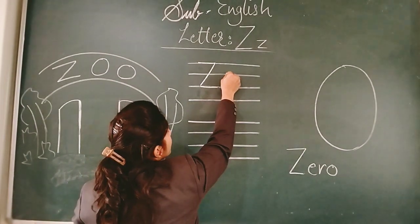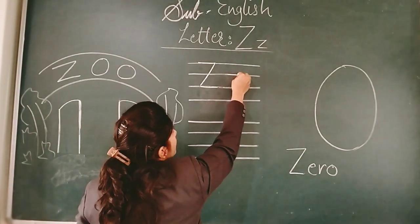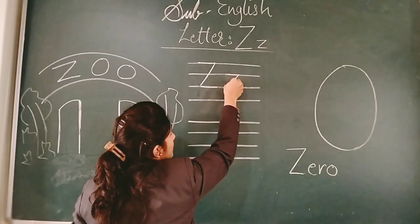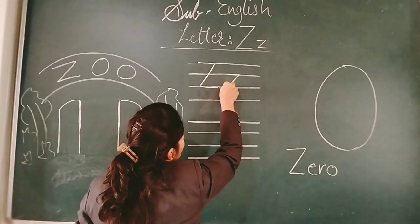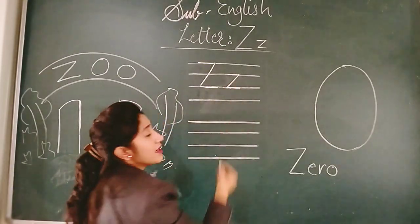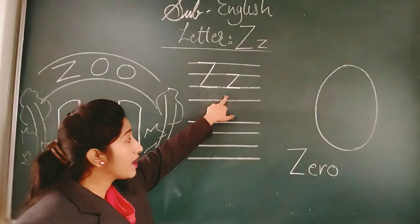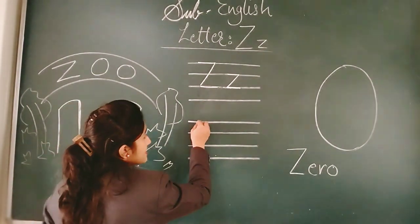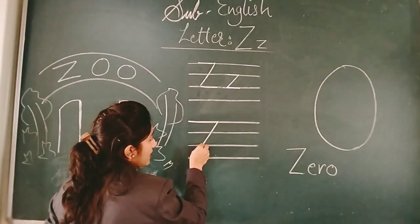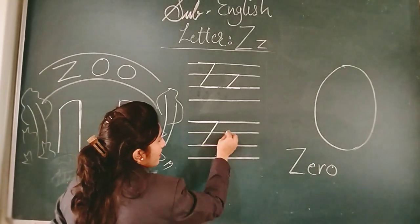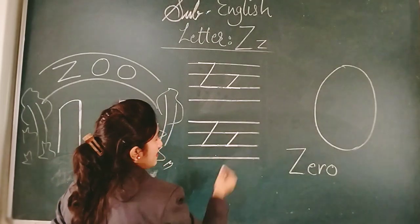Abh small Z hum kya kareghe? Second line mein eek sleeping line, phir second line se third line tak ham lenge eek backward slanting line, aur phir again third line mein eek sleeping line. So this is small Z. Let us see once again — sleeping line, backward slanting line, again sleeping line.